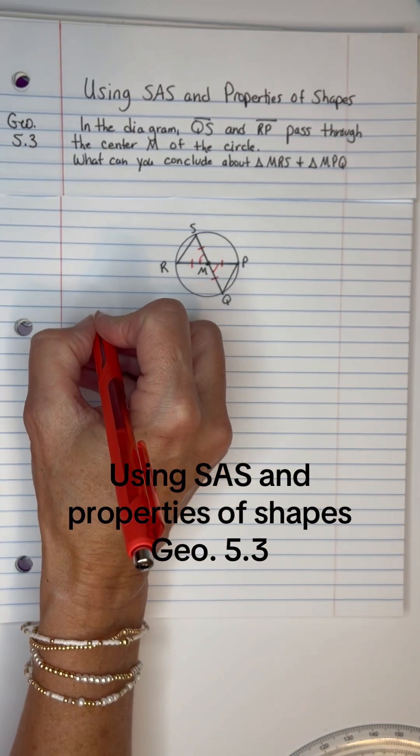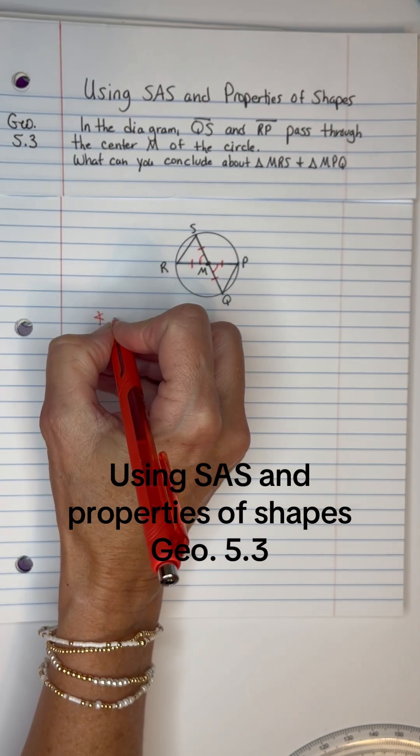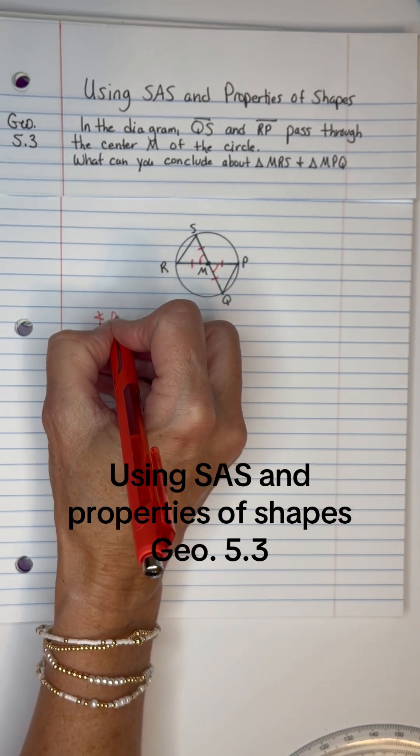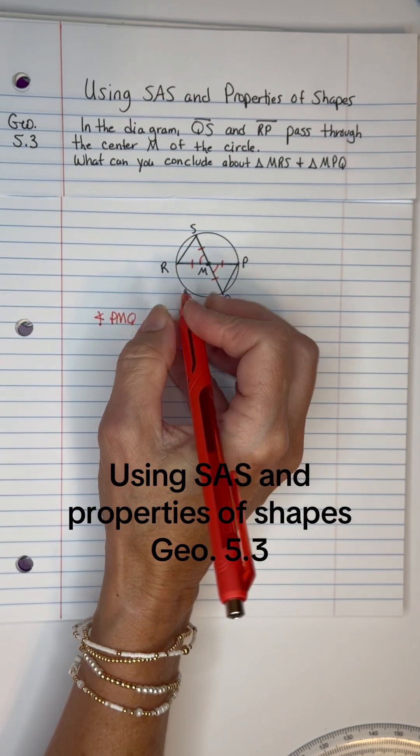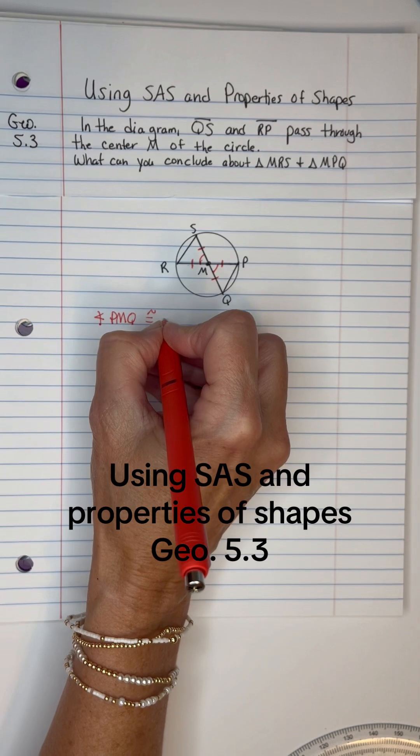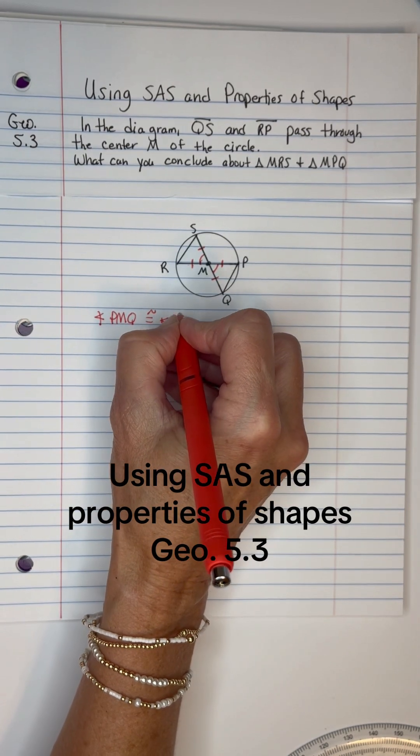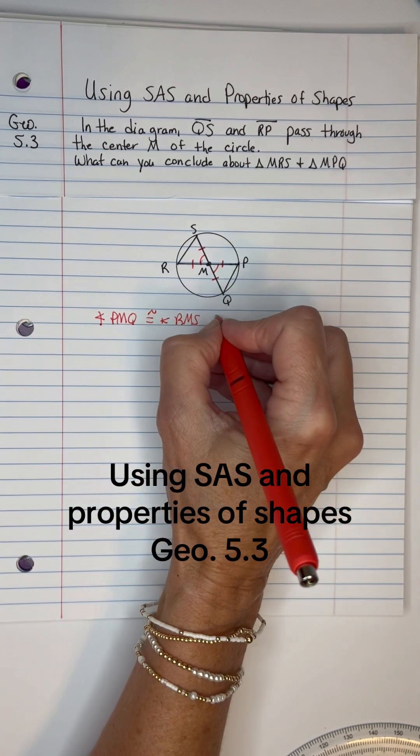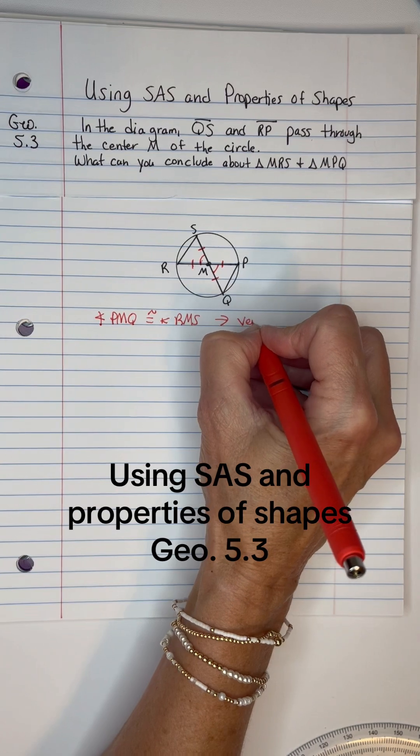So let's say angle PMQ is congruent to angle RMS and then just put over here to the side, vertical angles are congruent. Vertical angles are congruent.